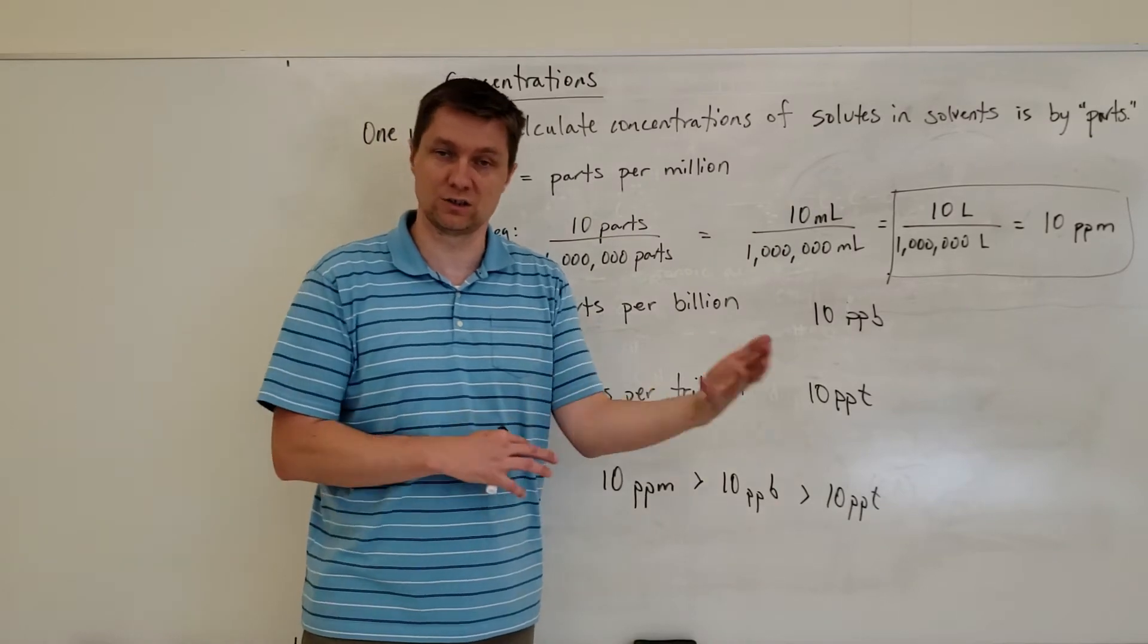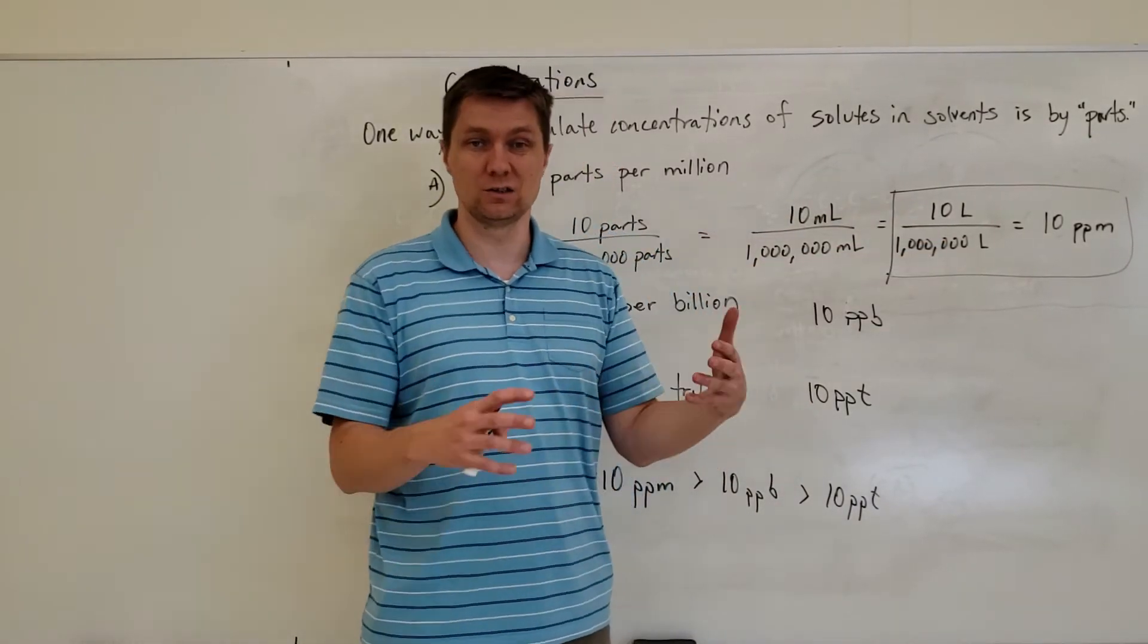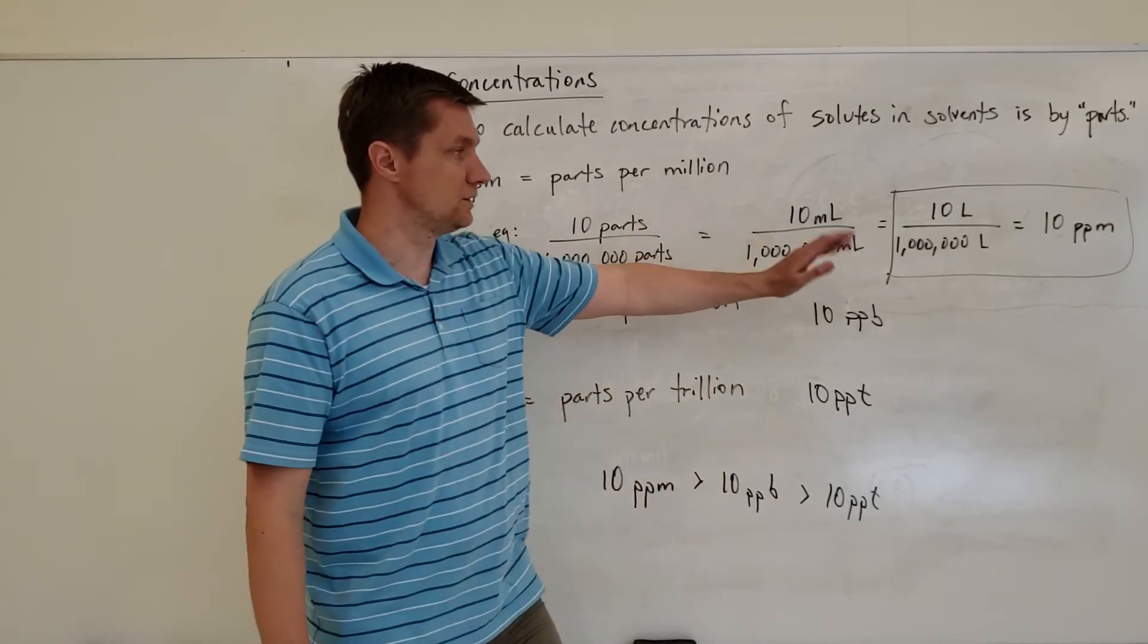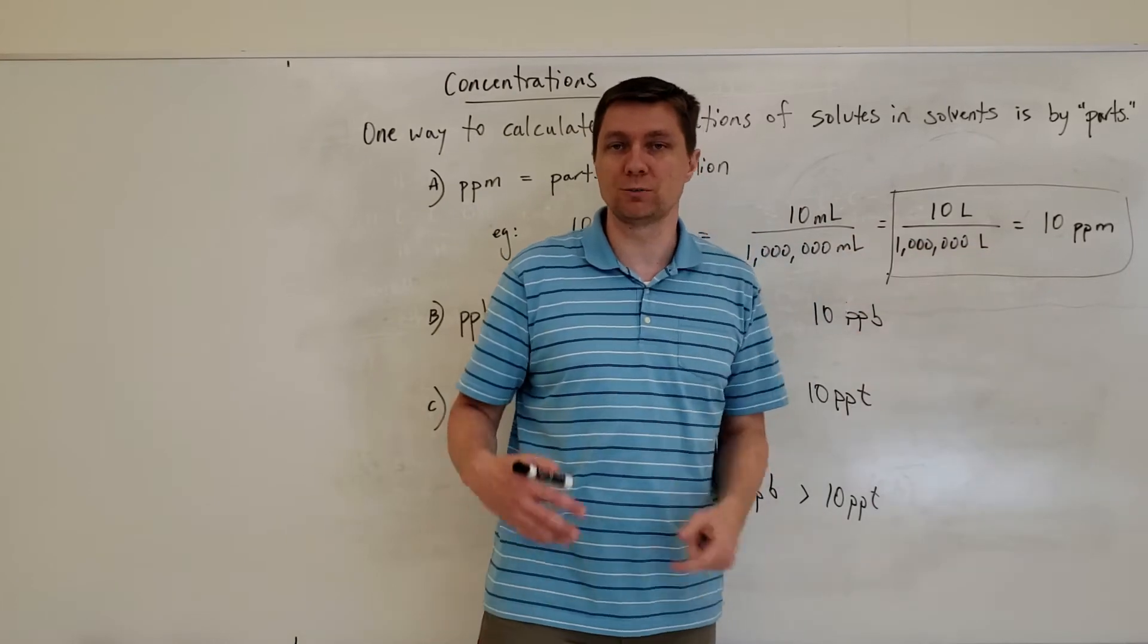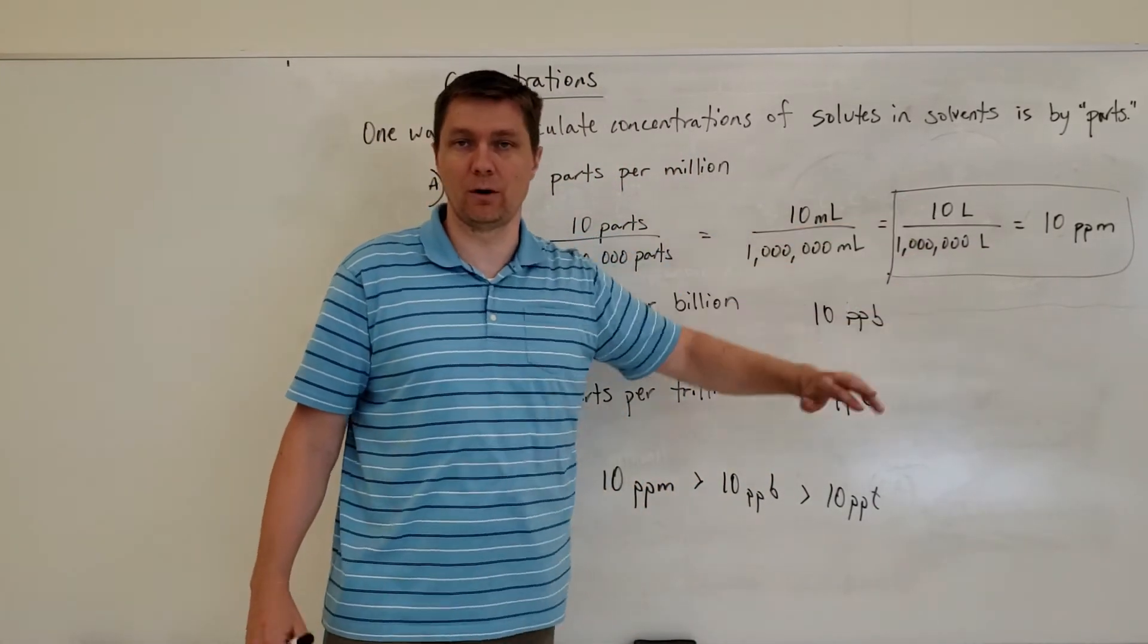And so if I had ten parts in a million parts all that means is I could say okay well that could mean I have ten milliliters dissolved in a million milliliters or it could mean I have ten liters dissolved in a million liters. Either way all of these are going to equal ten parts per million. You just have to make sure that the units on the top and the bottom are the same.